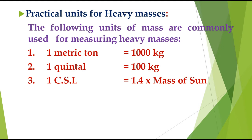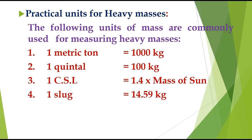One quintal equals one hundred kilograms. One CSL — which stands for Chandrasekhar Limit — is equal to 1.4 times the mass of the sun. It is a larger unit used to measure very large masses.